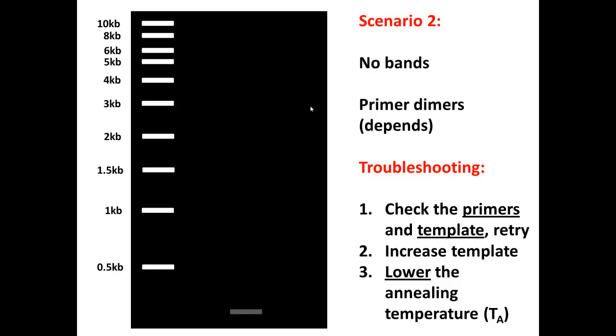Let's look at scenario two. We get no bands, nothing at all, maybe some primer dimers, but that's about it. What I suggest is that number one, you want to go ahead and check your primers and templates and you want to retry your experiment. If that doesn't work, maybe you can try increasing the template, your DNA template. Maybe you just don't have enough DNA. I personally usually use around 10 nanograms when I'm using my plasmids as my templates. Now if it still fails, you can try lowering the annealing temperature because the annealing temperature that you're using right now may just be too high for your primers to stably bind to your template. So lowering it will promote binding.